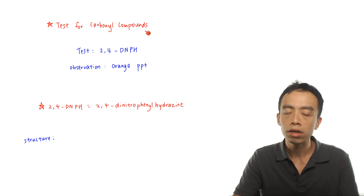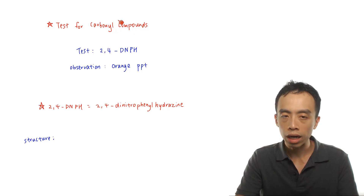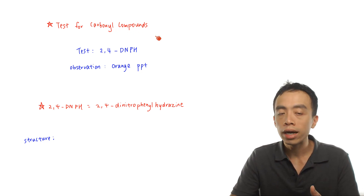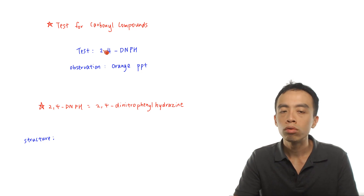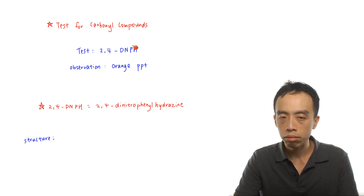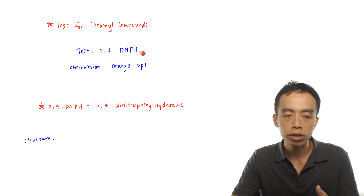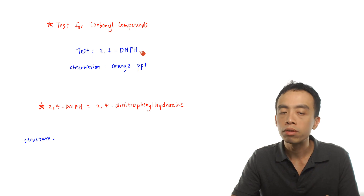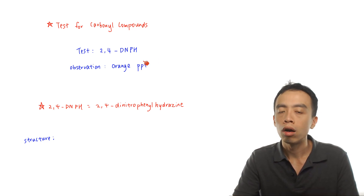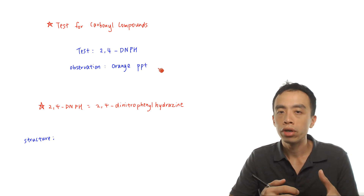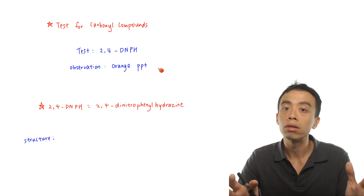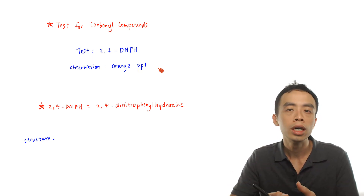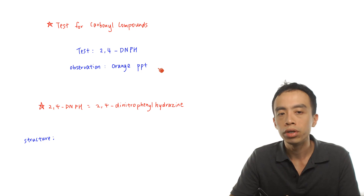The distinguishing tests or identification tests for carbonyl compounds — for both aldehydes and ketones — what we can do is we can just add 2,4-DNPH at room temperature, and the observation that we are expected to get will be an orange precipitate. Now this reaction is actually a condensation reaction. Later when we write out the balanced equation, we will be able to appreciate that.